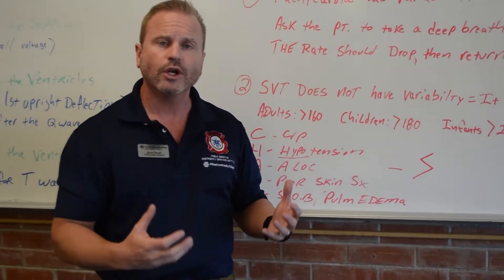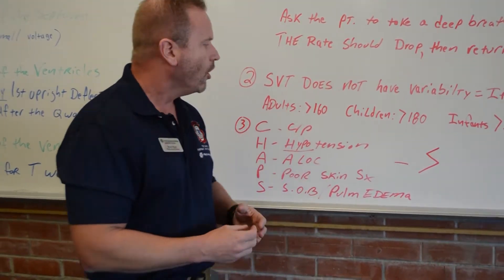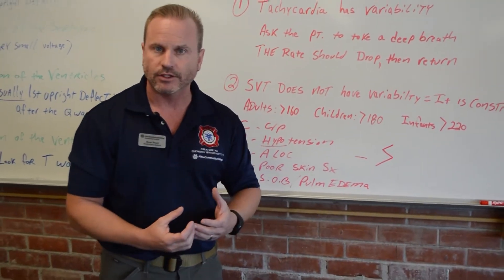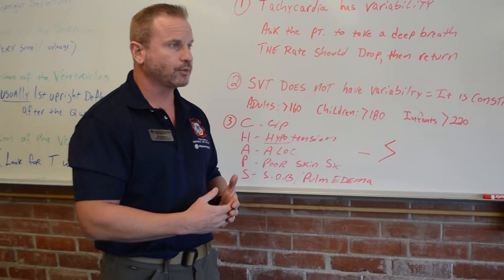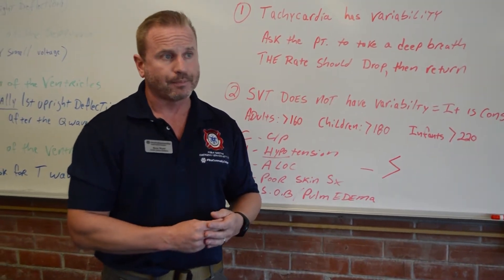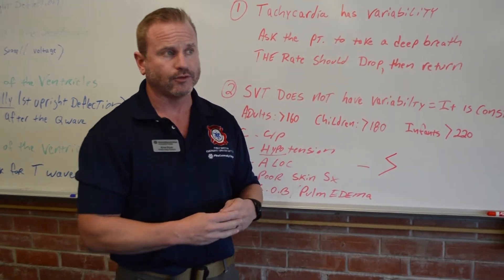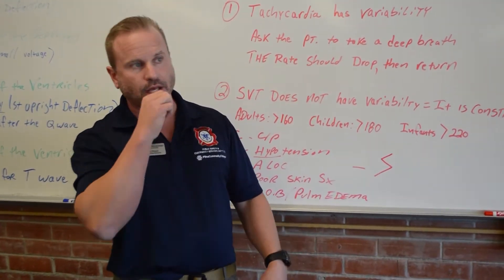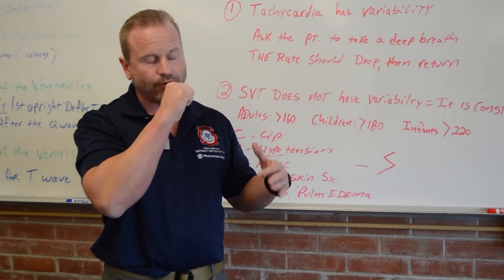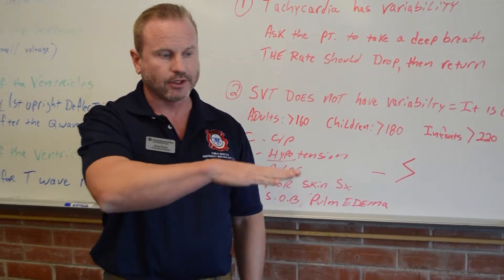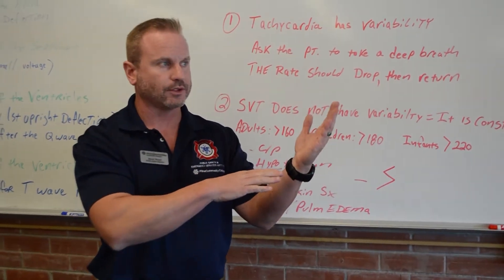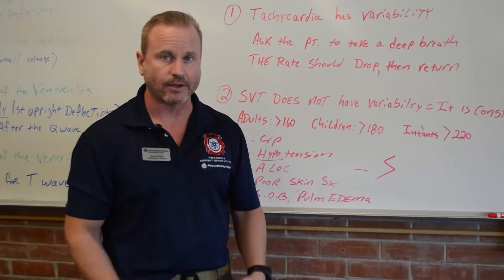The question is what do we do with these? For all patients, we go least invasive to most invasive. We start with all the simple vagal maneuvers. We follow the REVERT study: sit them up, have them blow out for 10 to 15 seconds on a syringe, then lay them down and raise their legs up. Up to about 40% of the time, that knocks out the SVT — no drugs and no pain from shocking them.